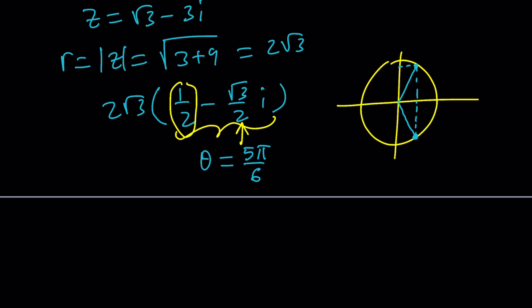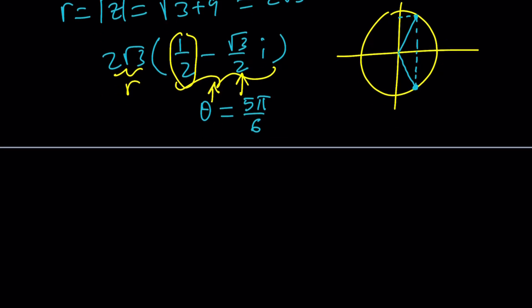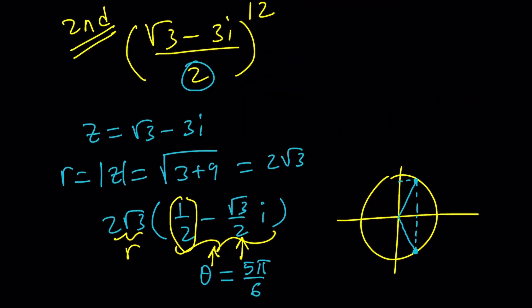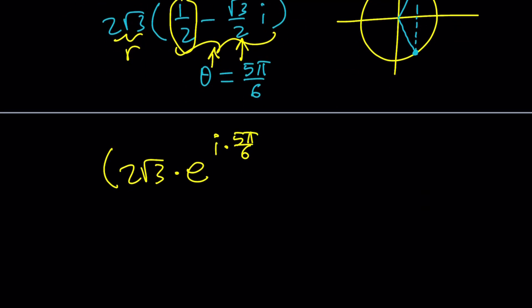So we kind of got theta. We know R. We can go ahead and write this expression in polar form. And then raise it to the 12th power. So we now get 2 root 3 times e to the power i times 5 pi over 6. Remember, this expression is in the numerator. And I'm supposed to divide by 12. But let's go ahead and raise it to the 12th and then divide by 2 to the 12th, right? Great.